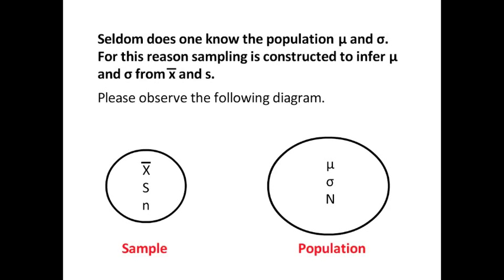Take just a moment to observe this diagram. Seldom does one know mu and sigma for the population. We can think of infinitely many populations that we would have no real clue right off the bat as to what the values of mu and sigma are. For this reason, we construct sampling to infer the values of mu and sigma from x bar and s.